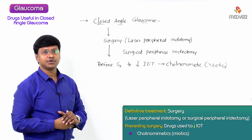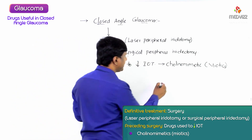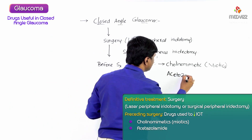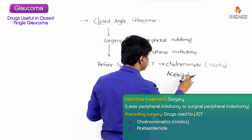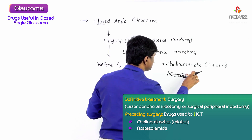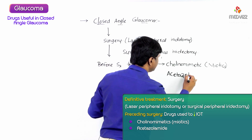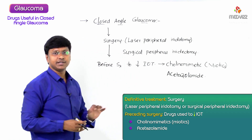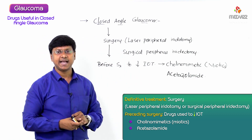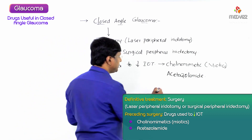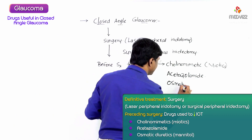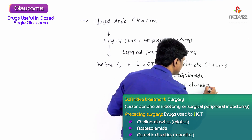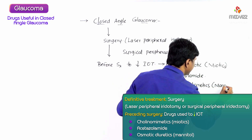Before surgery, to reduce intraocular pressure, we can also use acetazolamide. Acetazolamide is a carbonic anhydrase inhibitor — it will reduce aqueous secretion. We can also use osmotic diuretics; for example, mannitol.